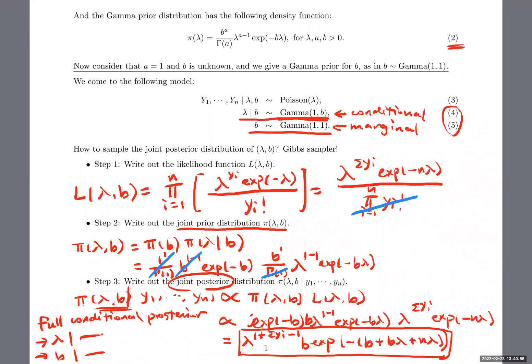Let's spend a few more minutes for you to derive the full conditional posteriors. When you're trying to derive the full conditional for lambda, you should treat everything else as constant. When you try to derive the full conditional for B, you should treat everything else as constant — meaning you don't need to worry about the other terms at all. You should only collect the terms about lambda when deriving the full conditional for lambda, and only collect the terms about B when deriving the full conditional posterior for B. In this exercise, both full conditional posteriors should be recognizable as one of the known distributions we've talked about. Take a moment to work on this.